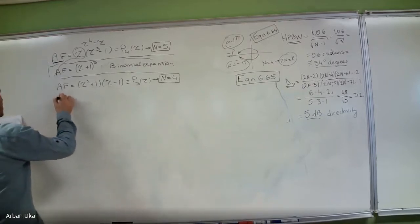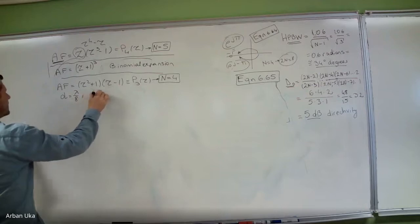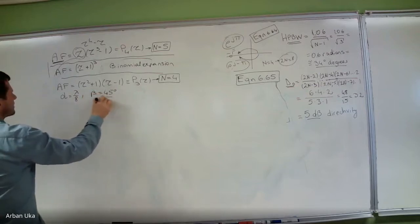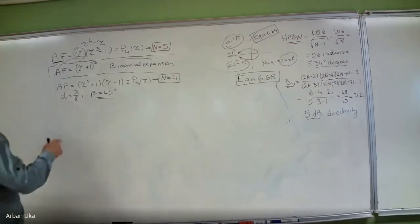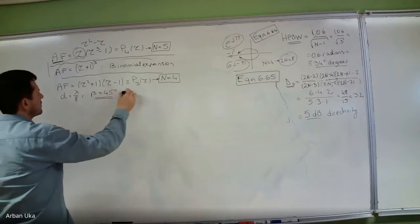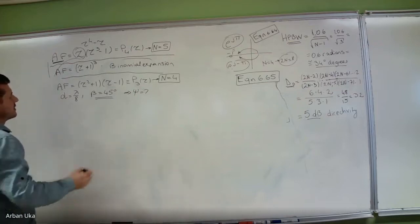Let's consider also that d = λ/8 and β = 45°. If we do a more detailed analysis, we need to determine the roots. And once we have these values, we can try to determine what ψ is.